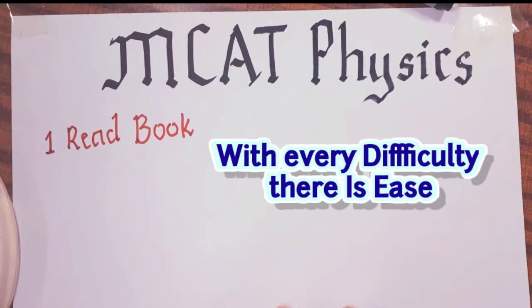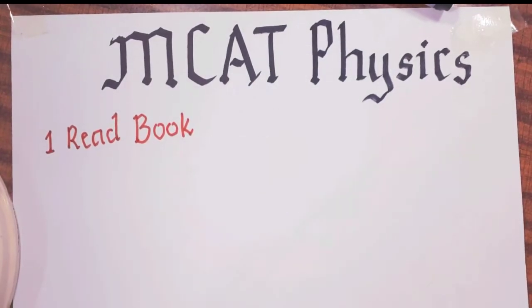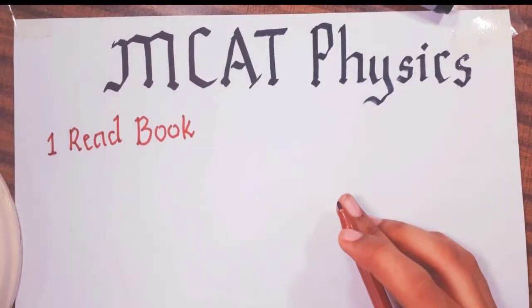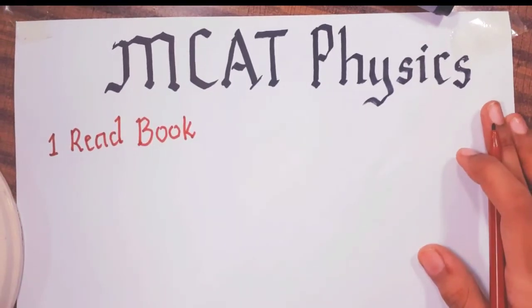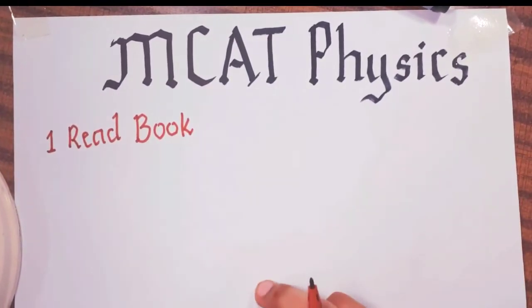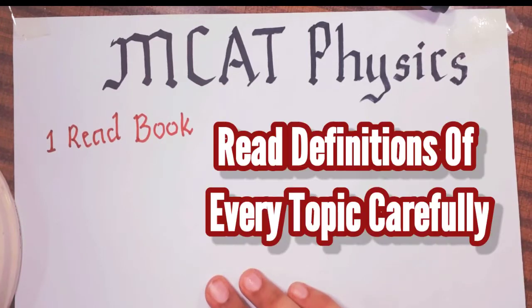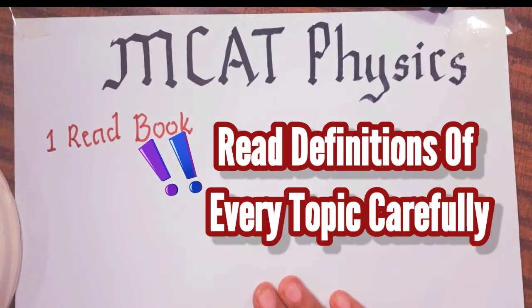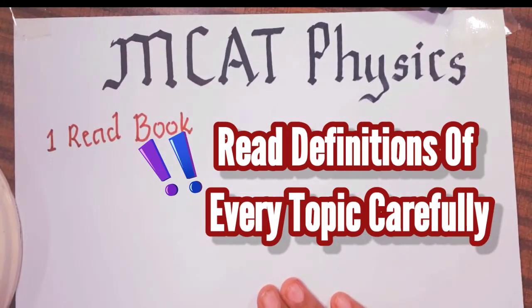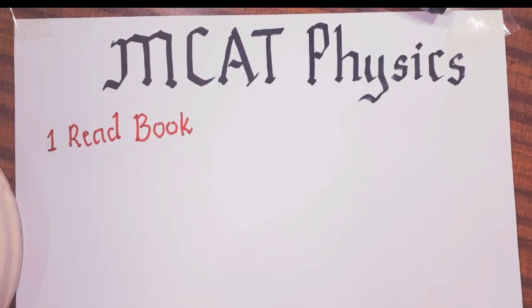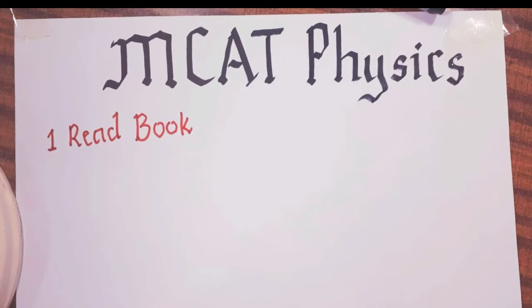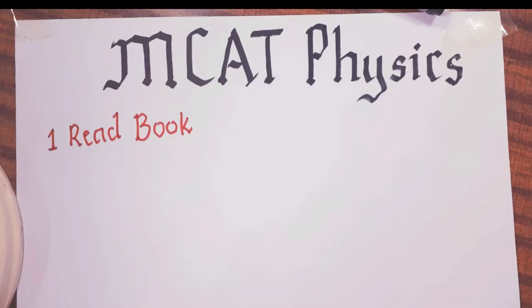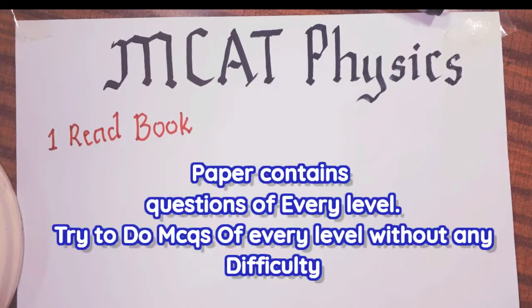So aapne book zaroor padni hai physics ki. Agar aap 2018 ka paper dekha hai, toh us paper mein just I think two problems thi aur baaki sab book ki lines hi thi. Exact book mein jo velocity ki definition liki hui thi, exact velocity ki definition paper mein bhi thi. Paper jo hota hai woh har tarah ke students ke liye banaya hota hai. Kuch MCQs jo hote hain woh easy banaye hote hain taaki har student solve kar sake.